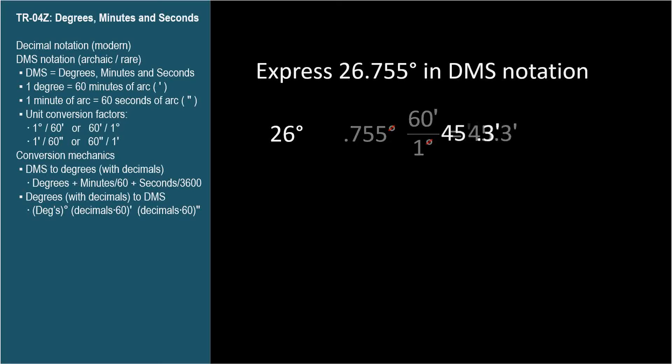So we take the whole part, and that's our minutes. And we again take the fractional part of this number, .3, and multiply by 60, which is multiplying .3 minutes times 60 seconds per minute. The minutes cancel, leaving us with 18 seconds.